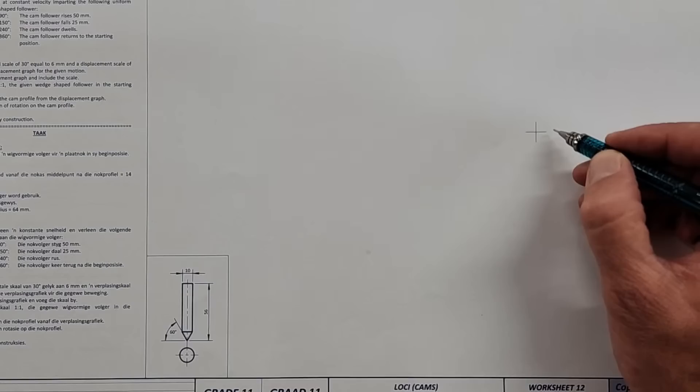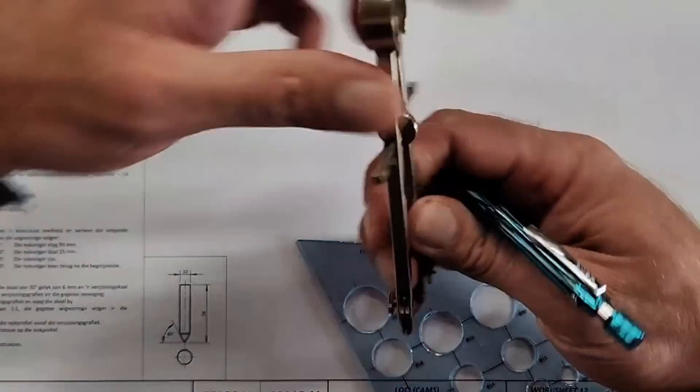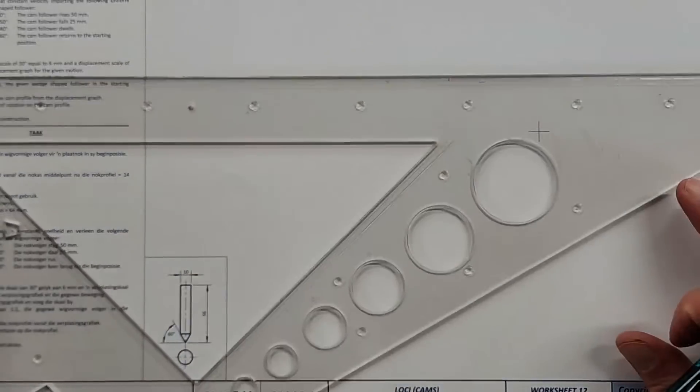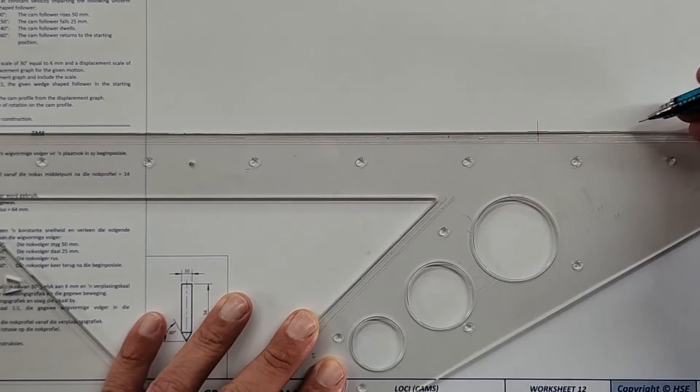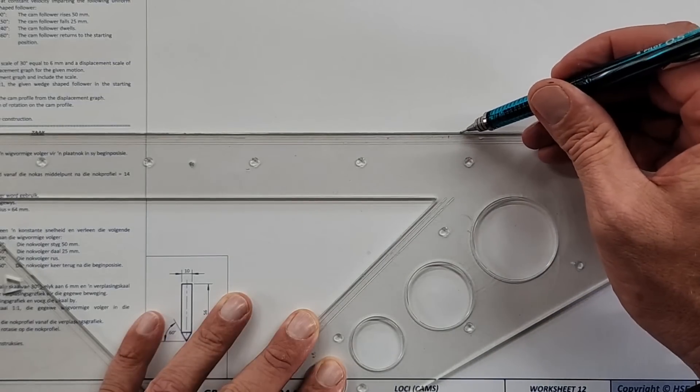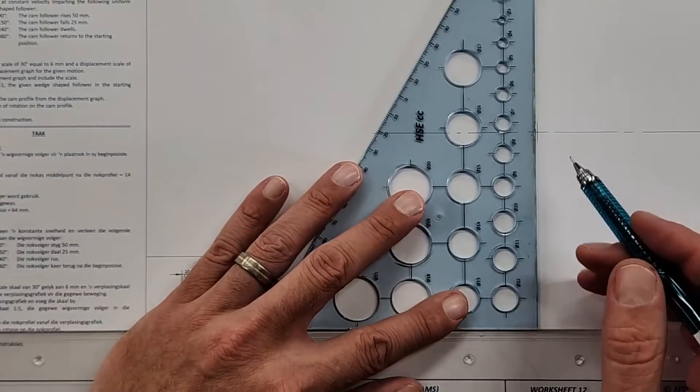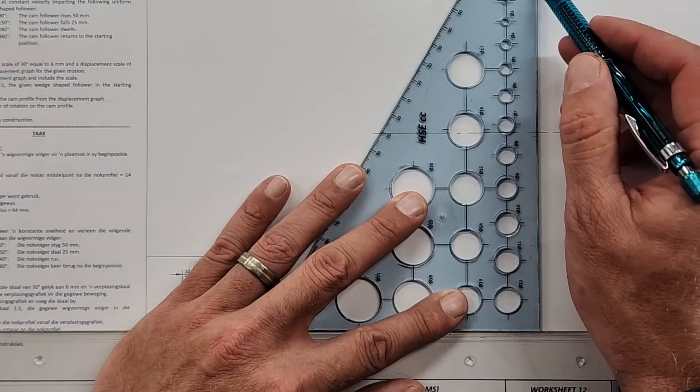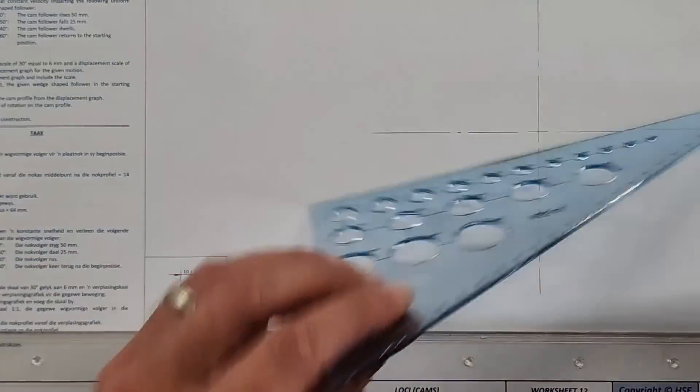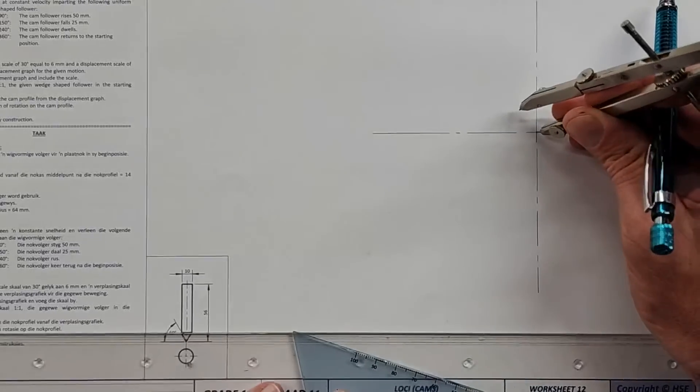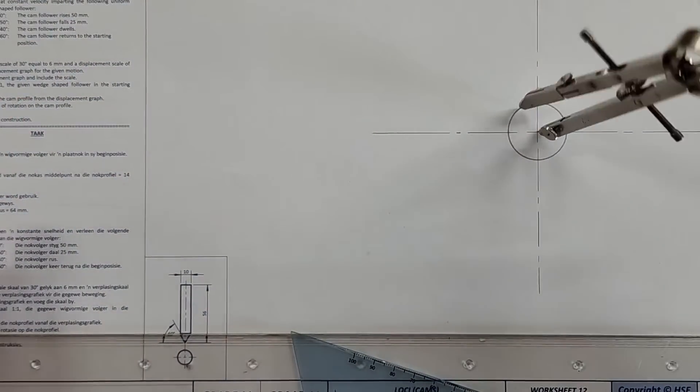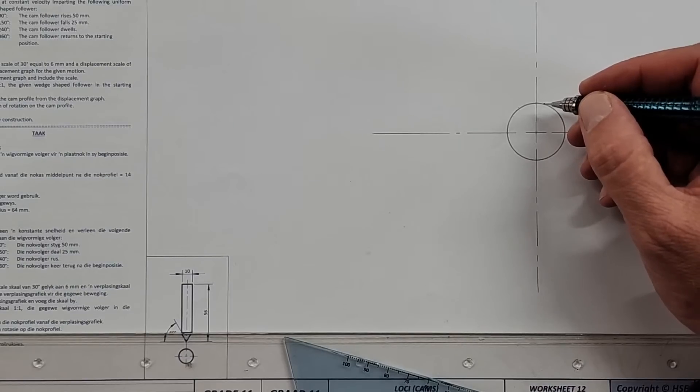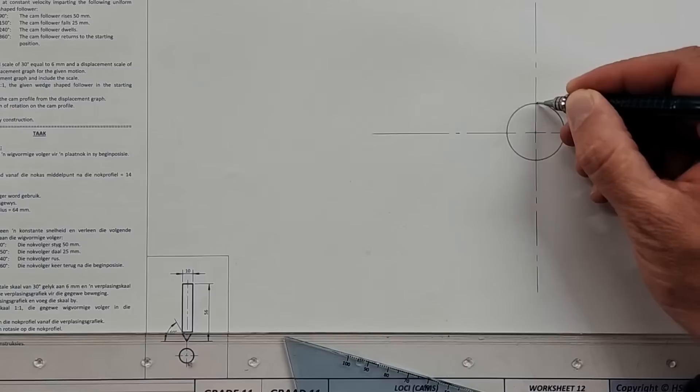They say the minimum distance from the cam shaft center to the cam profile is 14 millimeters. Let me just do my center lines first here. I'm going to take you through the steps, final steps, to make sure you're able to draw a complex loci here for Grade 11. We've set this on 14 radius and we're going to draw the minimum distance from the cam shaft center to the cam profile. That's the minimum distance that our follower will be from the cam shaft center.